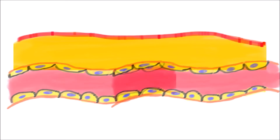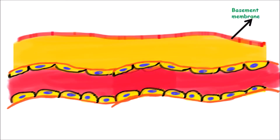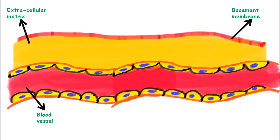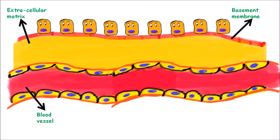Now we will discuss hematogenous spread in detail. Suppose this is the basement membrane — the membrane onto which the epithelial cells lie. It is basically a separation between the extracellular matrix and the epithelial cells. This is the extracellular matrix which lies beneath the basement membrane, and this is the blood vessel which will be the main epicenter for the hematogenous spread. These small things are actually the tumor cells — let's consider this as an epithelial tumor, with these epithelial tumor cells lying on the basement membrane.